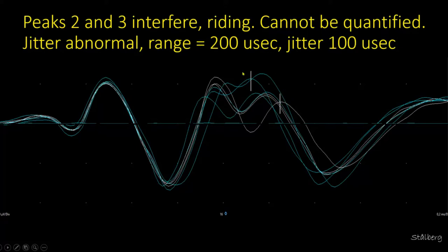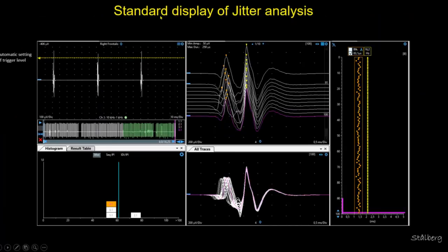It is difficult to measure this variability precisely, but you can see it with the eye. In a standard display, we trigger the signal on a given highest amplitude. In this case we triggered on number two and got the jitter of number one. In superimposed mode and dot plot, the triggering signal is shown in yellow and the variability in another color. The jitter here is 83 microseconds.